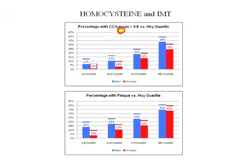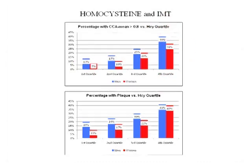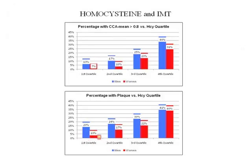The percentage with an abnormally increased IMT (above 0.8) is relatively low in those with low homocysteines, but in both men and women in the upper quartile of homocysteine, IMTs are greater. Percentage with visible plaque is also low in those with low homocysteine and high in those with high homocysteine. Homocysteine causes endothelial dysfunction, which leads to increased IMT, which leads to increased plaque deposition.